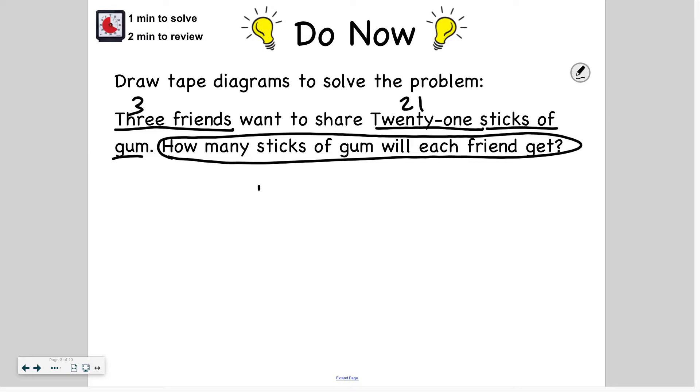Alright so let's get into it. First thing we should do is draw our tape diagram because it asks us to draw a tape diagram to solve. And I know that in total there are 21 sticks of gum. So in this specific problem there are three friends and I'm trying to figure out how much gum each friend will get. So I know how many groups there are. I don't know how much is going into each group. There are three friends. One, two, three. And I need to figure out how many sticks of gum they're each going to get. What's the group size of my group going to be? So I'm going to keep adding sticks of gum to each friend until I get to 21 sticks of gum, until I use them all up.